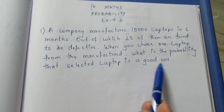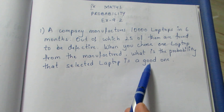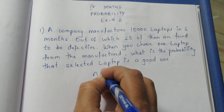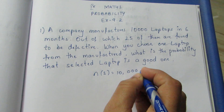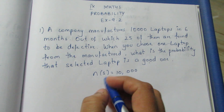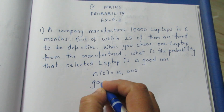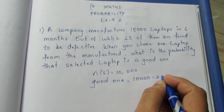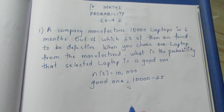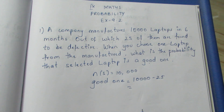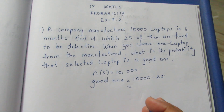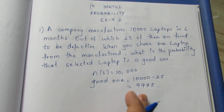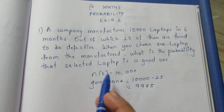So, if we select it, what is the probability it is a good one? 25 are defective. n of S is equal to 10,000. The number of defective ones is 25. We need to find the probability that the selected laptop is a good one.